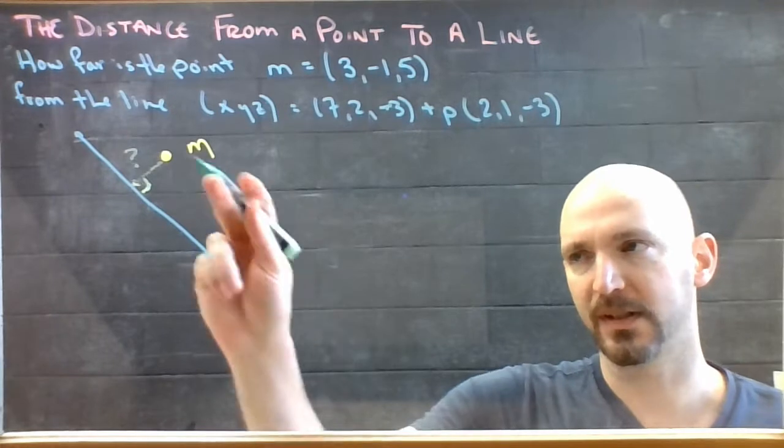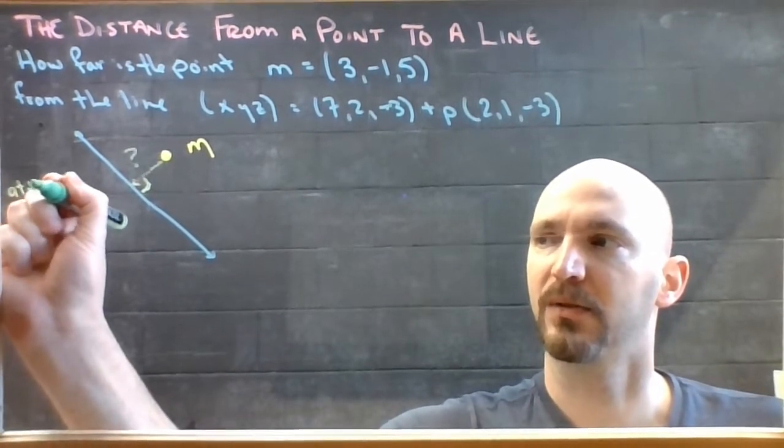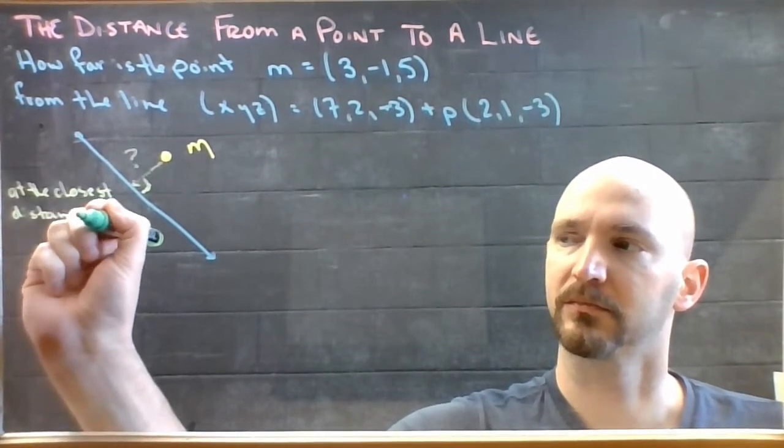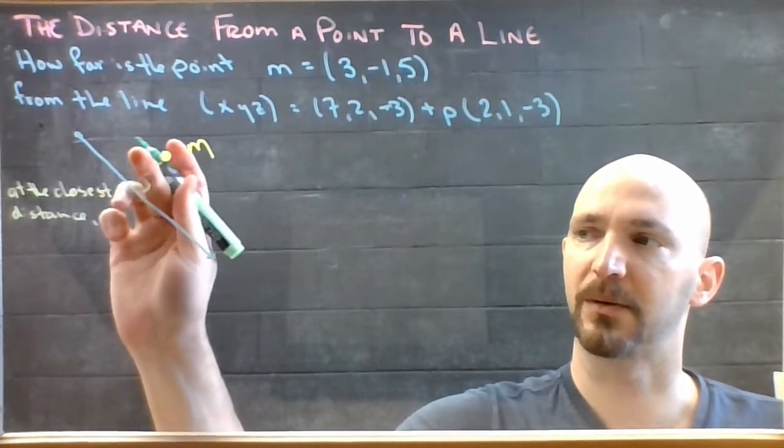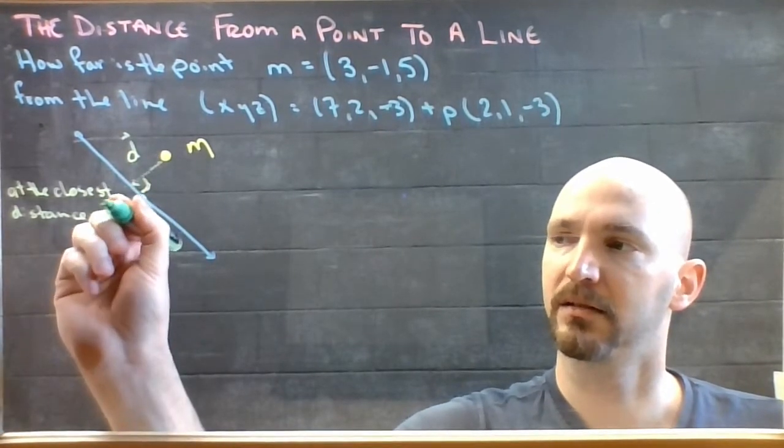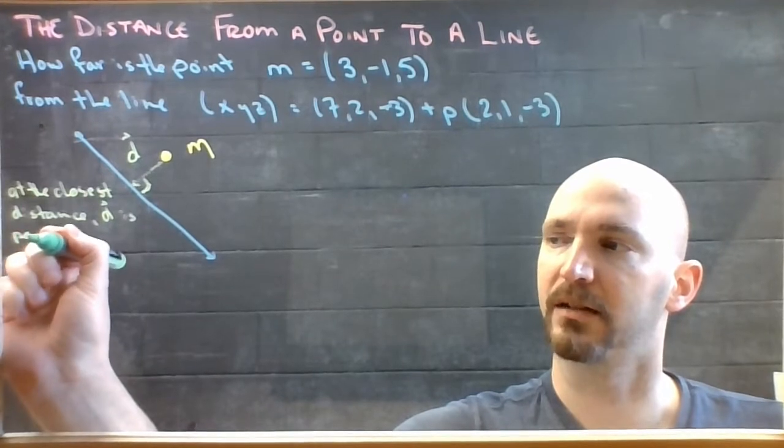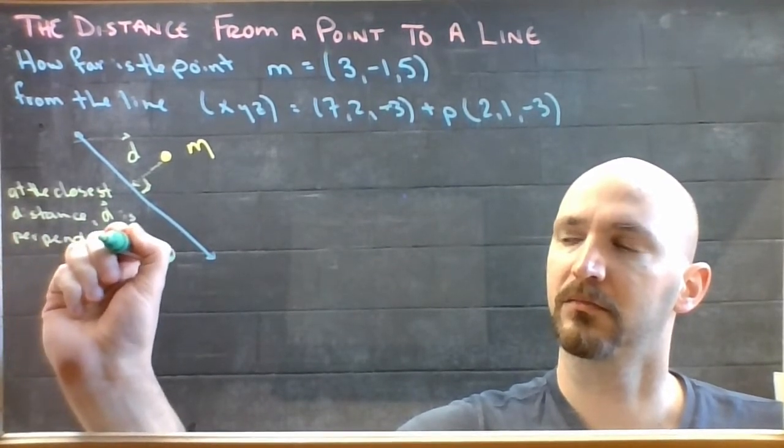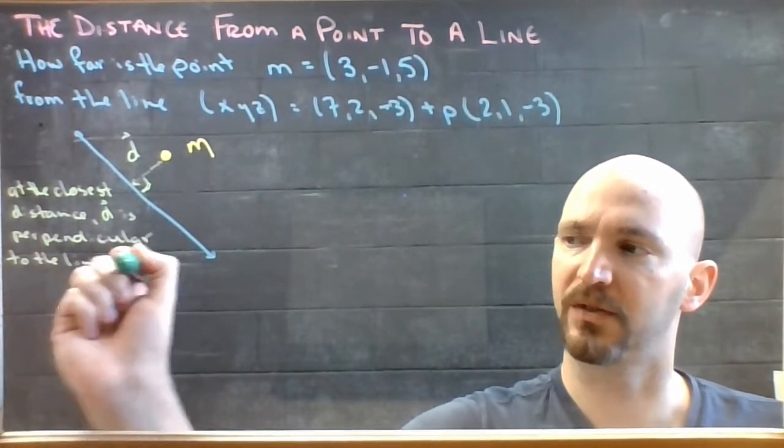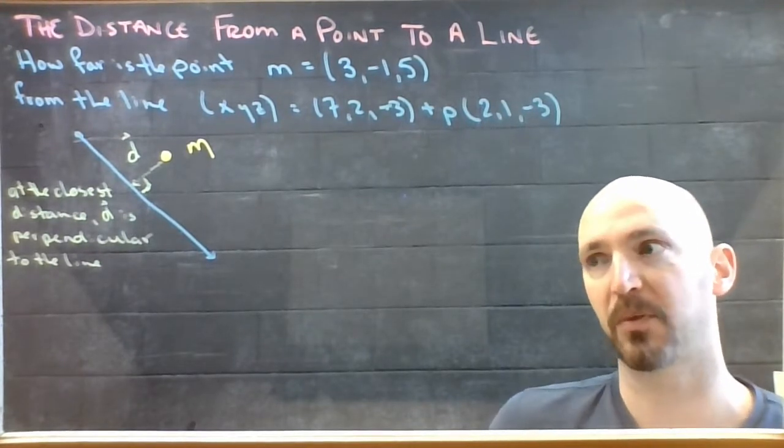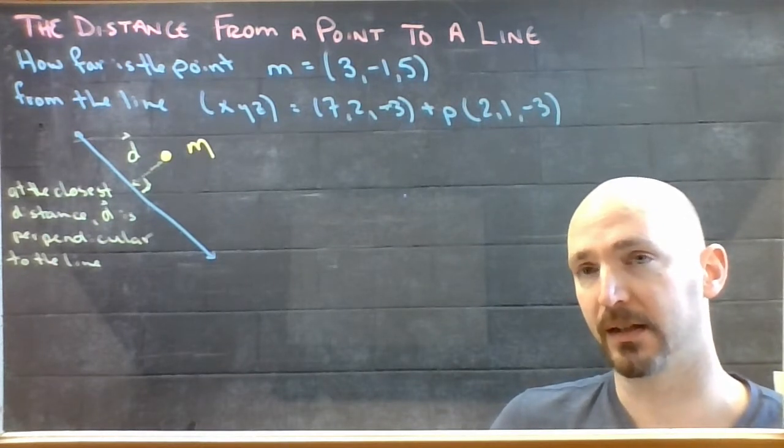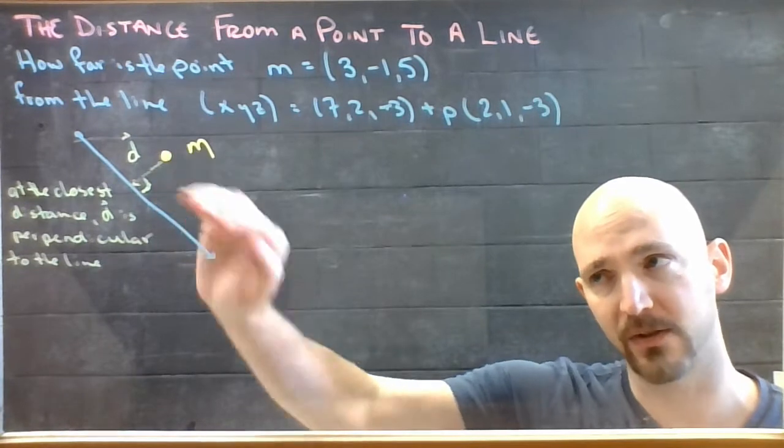So at the shortest distance, at the closest approach, this vector here, which I'm going to call D for distance, D is perpendicular to the line. You just did examples where you forced a vector to be perpendicular by changing one coordinate. We're going to use that fact here to try and force this vector to be perpendicular to the line.